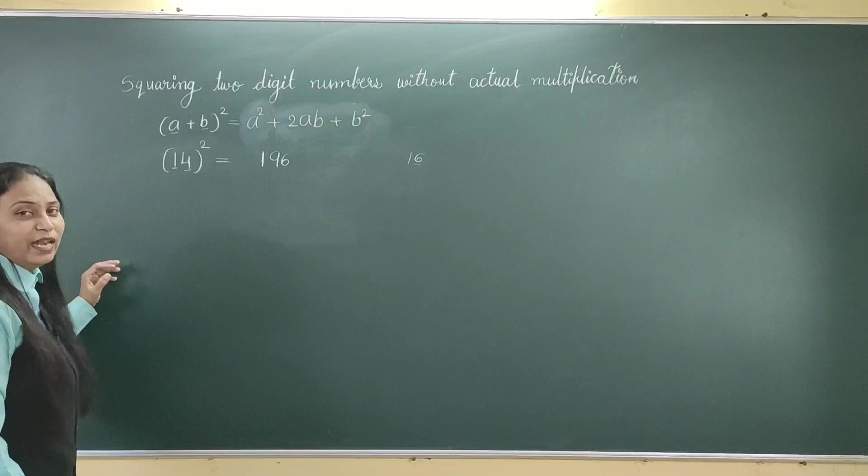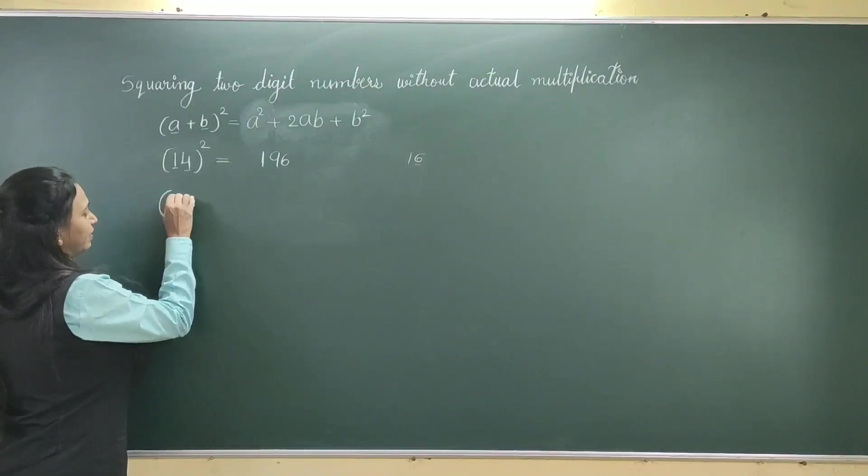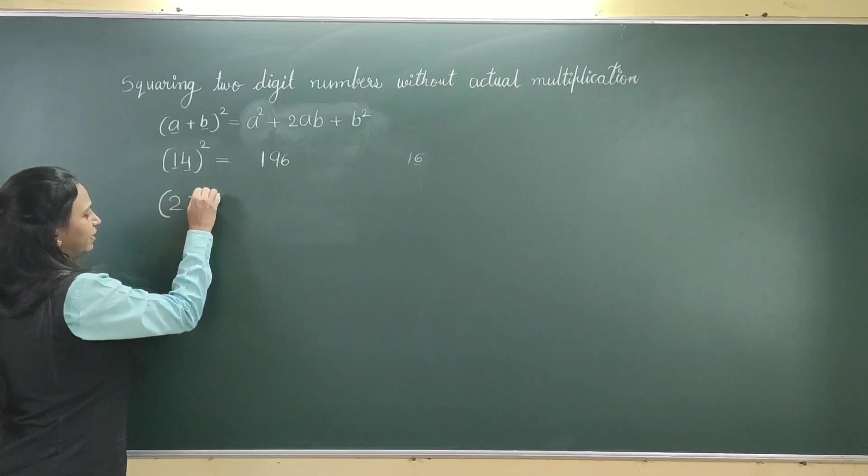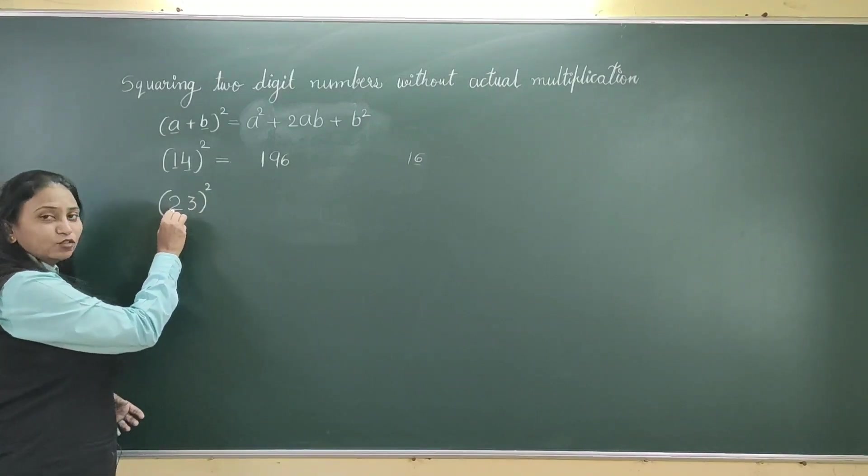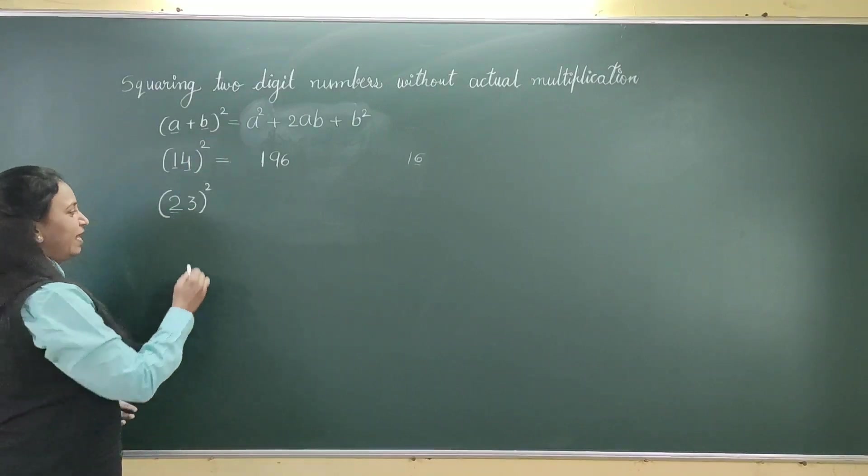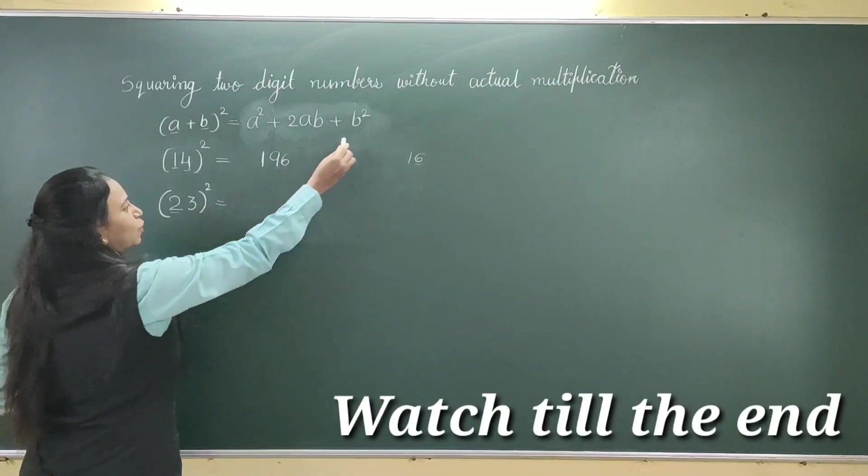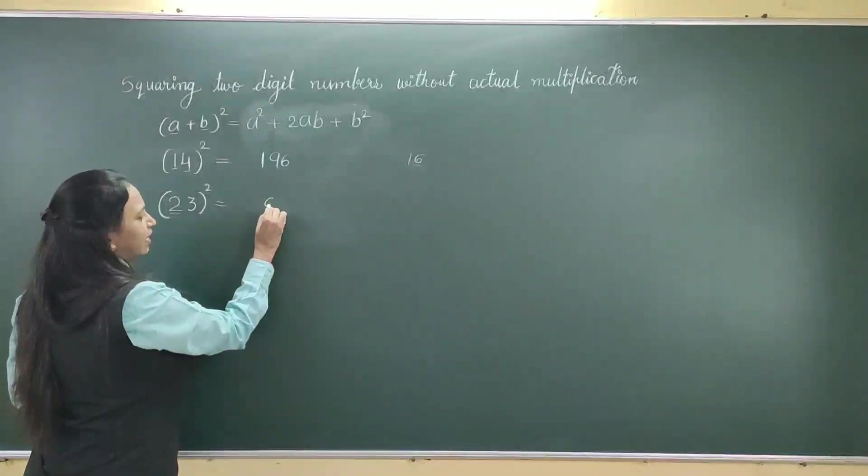To understand it well, I will give you one more example. Let us take 23². Now, here value of a is 2 and value of b is 3. Again, we will start from this side, square of b.